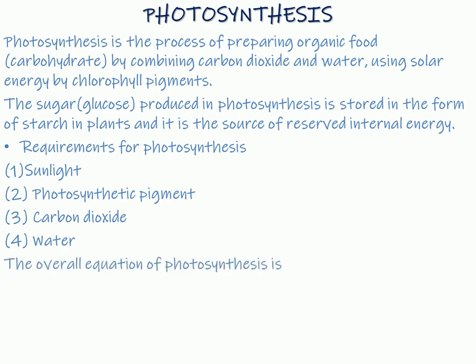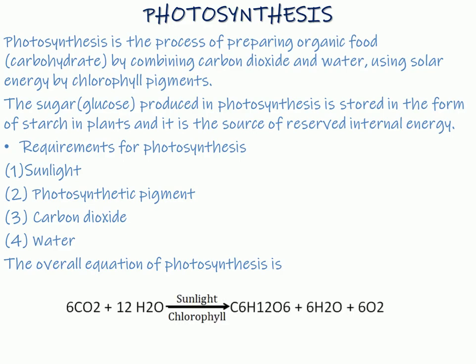The overall equation for photosynthesis is: 6CO2 + 12H2O in the presence of sunlight with the help of chlorophyll is converted into C6H12O6, that is glucose, and water plus oxygen.